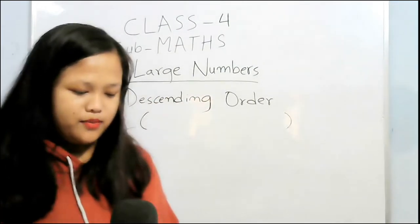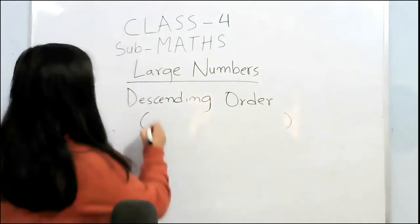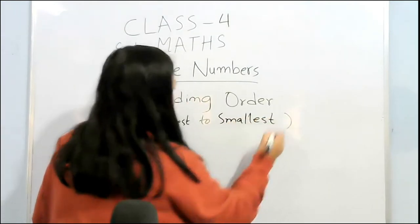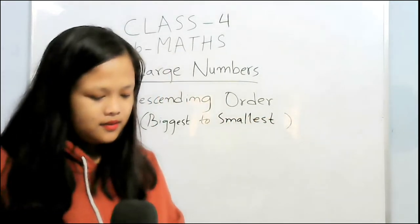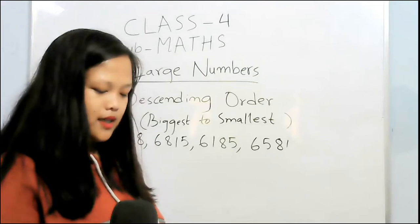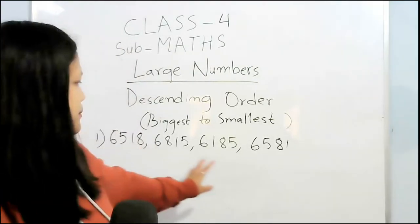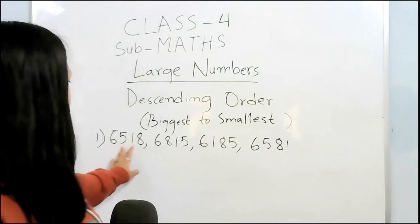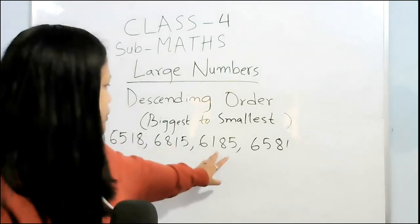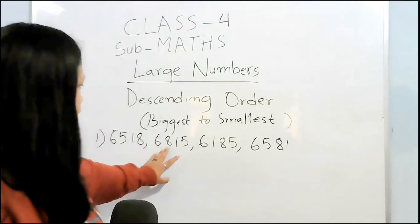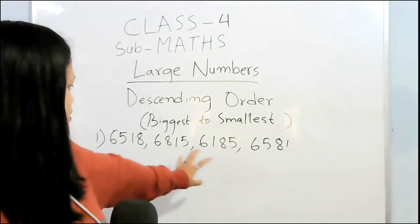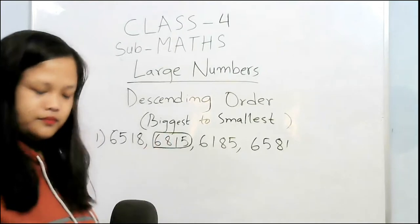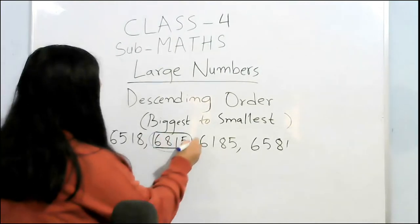Descending order means biggest to smallest. Question number 1. Here you have to find out which is the biggest number. All the first numbers are 6, so you have to look at the next number. Here 5, here 5, here 8, here 1, and here 5. 8 is bigger than others, so this one will be the first one. This one.